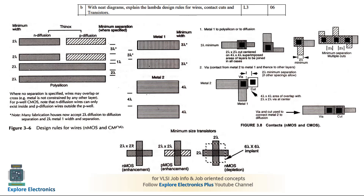For the P-MOS transistor, take P-diffusion horizontally and polysilicon vertically. For a depletion transistor, the channel is already created, shown with a dashed box indicating the implant — the channel is pre-existing. This is represented with a dotted box of size 6 lambda × 6 lambda in the layout.